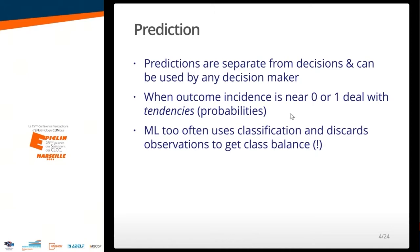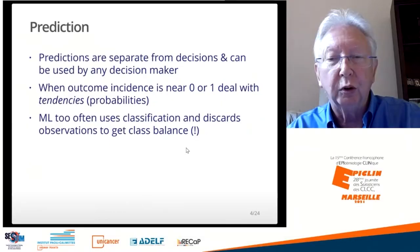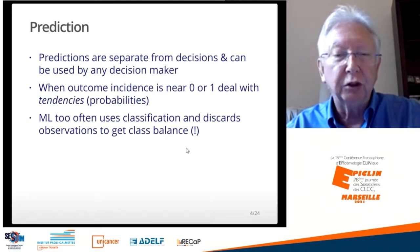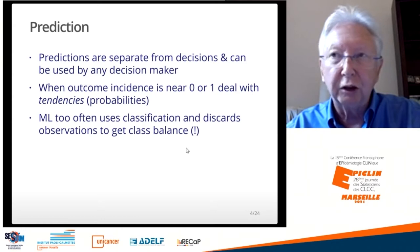The probability that someone has disease is 0.001. But machine learning too often uses classification. And because classification doesn't work well when you have an outcome incidence near zero or one, many machine learning advocates say that you need to discard observations to get class balance so that you can use a classifier.